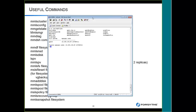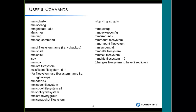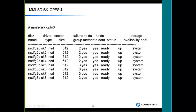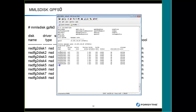All of the commands like MMLS, MMGET, MMDSH, and MMDEV are very safe commands to use. Anything that starts with DAL, RM, or CH — you really need to look at the man pages and understand the command before you use it. The MMLS disk command shows what disks are actually in a file system — disk name, driver type, sector size, storage pool, and all the information about that disk.